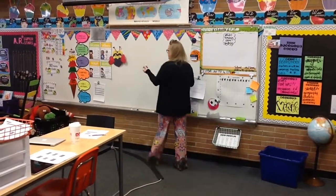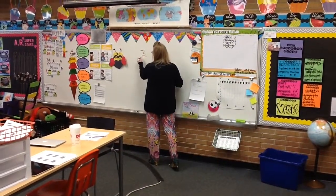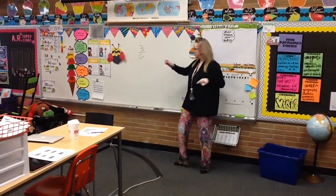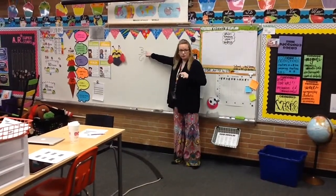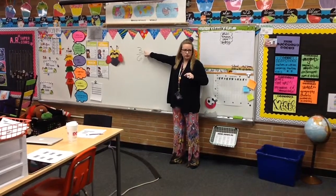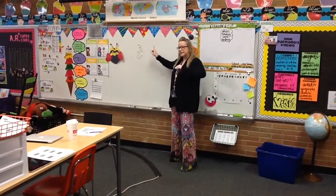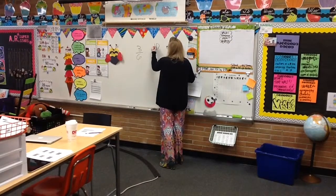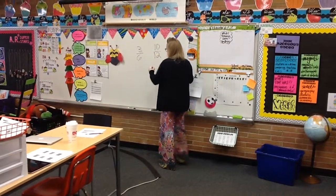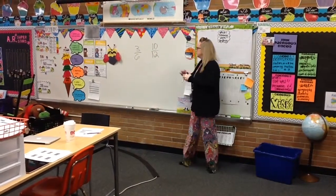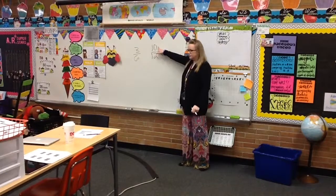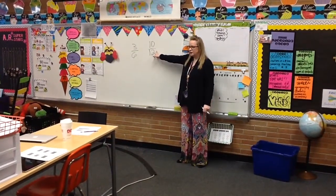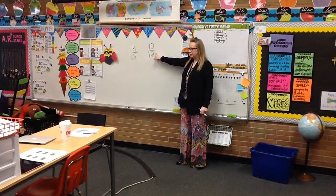We had a fraction that looked like this — we had like three sixths — and then we drew our area model and we were circling groups of three because that was our numerator. Today it's going to be a little bit more difficult. We're going to have a fraction that looks like this: ten twelfths. So will we be able to draw groups of ten? No. Are we going to be able to divide ten into twelve? No, we're not going to be able to do that.